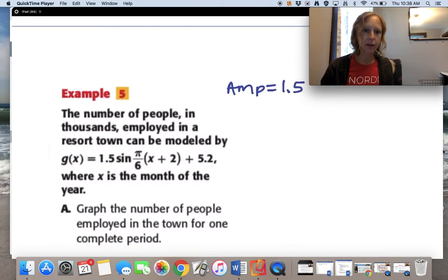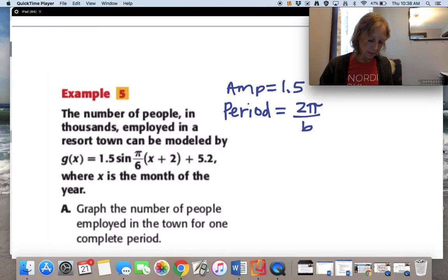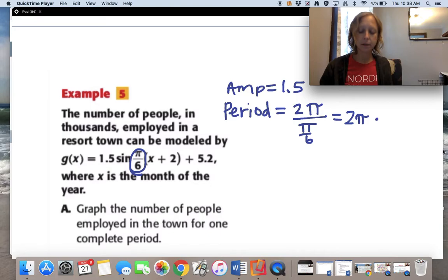Next thing I want to check is the period. Remember, period is 2π over B, and B is the number in front of the x. So we have 2π over π/6. That's equal to 2π times the reciprocal.